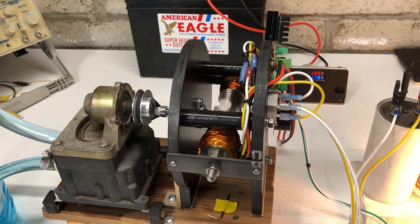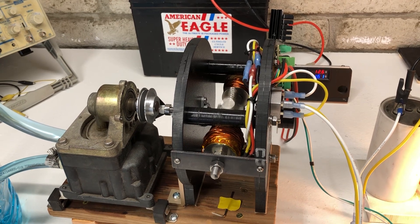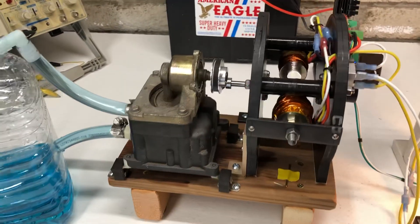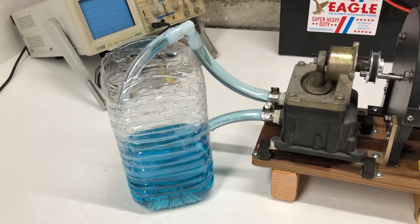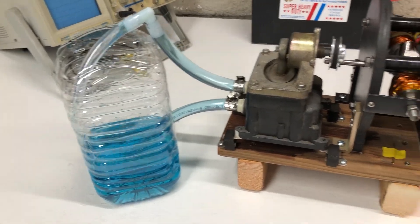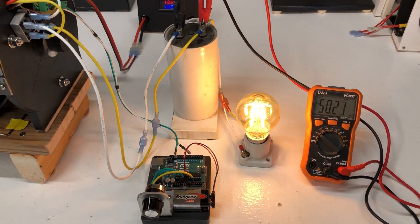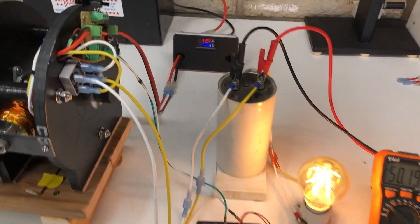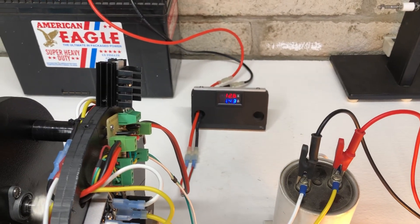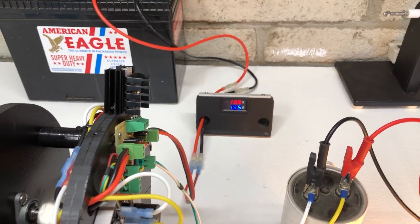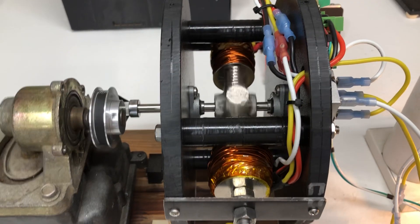So we'll turn this down to as low as it can go, which is about right there. Here's the output running 50 volts, running that LED light bulb. We're running about 1.5 amps average. You can see the motor just plunking along.